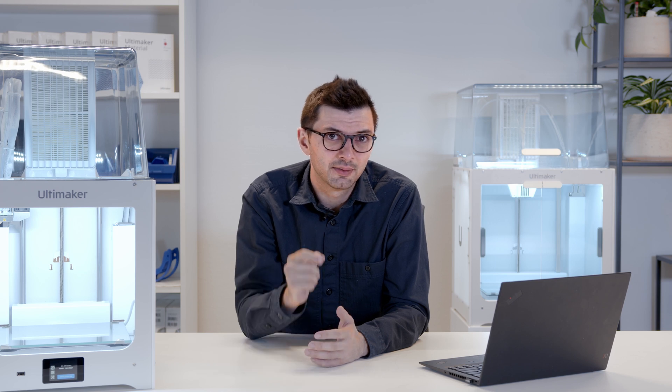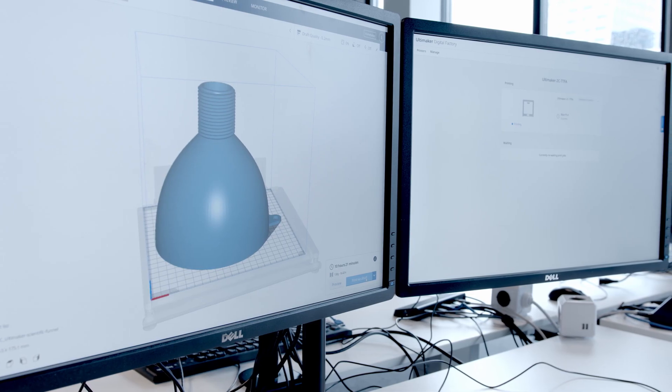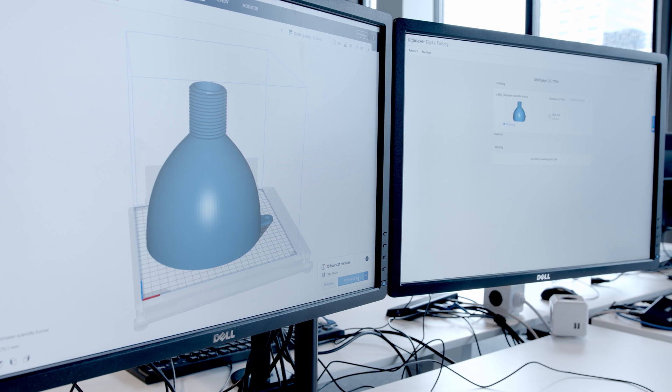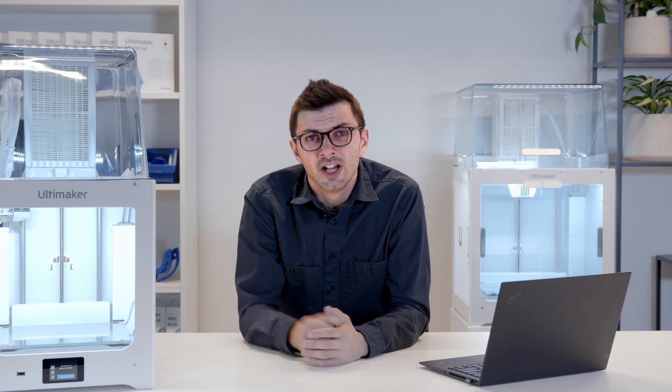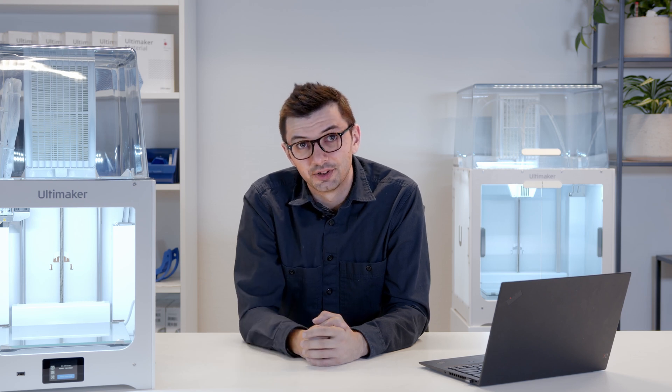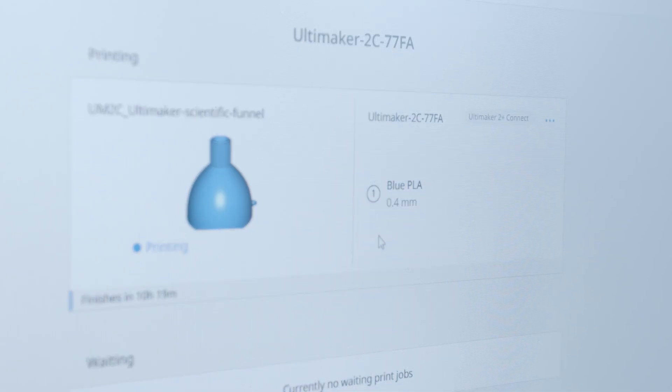The Ultimaker Digital Factory now shows you the state of your printer and print shop information. You can see the different printer statuses, such as printing, idle, paused, aborted or finished. You can view the full configuration of your printer, including nozzle size and loaded material.